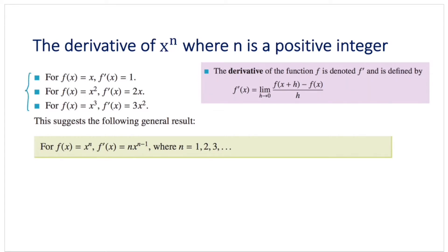So we have three derivatives here. When the original function is x, the derivative function is 1. When the original function is x squared, that's a quadratic function, the derivative function becomes 2x. When the original function is x cubed, that's a cubic function, the derivative is 3x squared. You might have noticed that finding the derivatives involves having new coefficients and reducing the power. So if the original function was a cubic function, the derivative became a quadratic function. When the original function was quadratic, the derivative became linear. And when the original function was a linear function, the derivative was simply a constant.